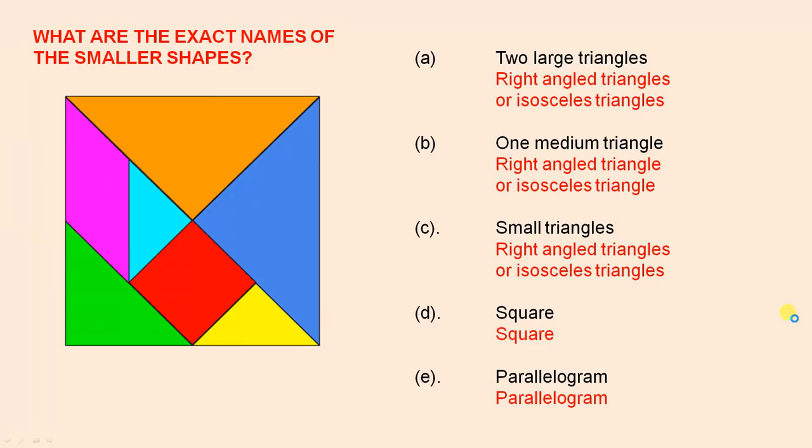What are the exact names of the smaller shapes? Now we started off, remember, with two large triangles. That's this one and this one. And they are right angle triangles or isosceles triangles.